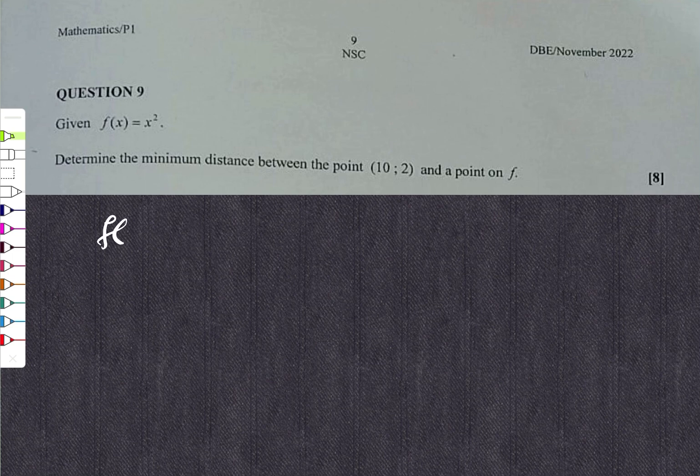They are saying that you are given the function f(x) equals x squared. Determine the minimum distance between the point, the point in the first quadrant, that is (10, 2), and at least the point on f. So let's try to really visualize this situation together.